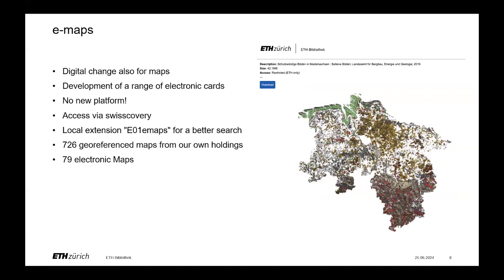The digital shift can also be seen for maps, so we started the e-maps project to develop and purchase a range of electronic maps. We didn't want to create a new platform, so access is via Swisscovery itself. With the local extension E01 e-maps, you can search for all of them — that's 726 georeferenced old maps and 79 electronic maps, including newer maps from 2019.